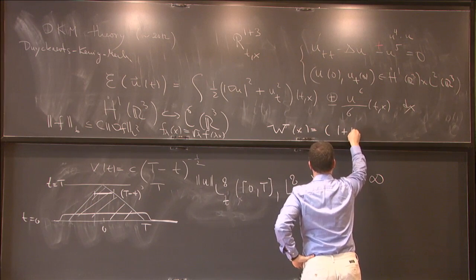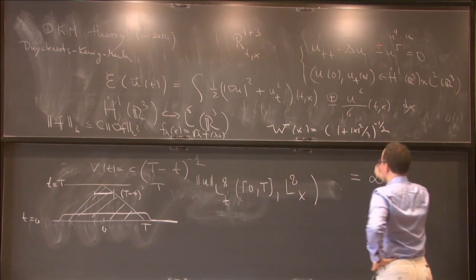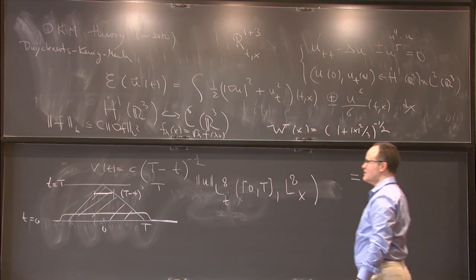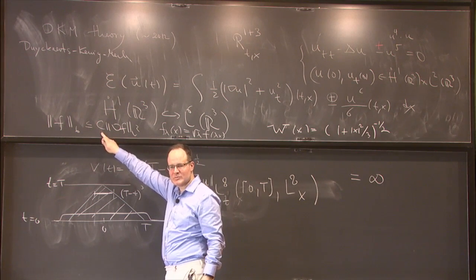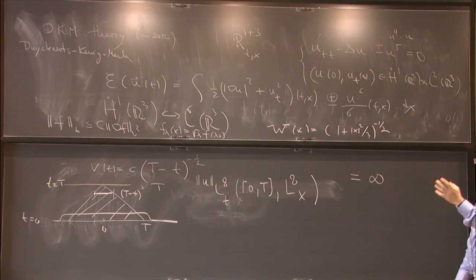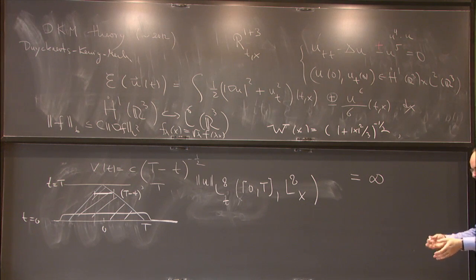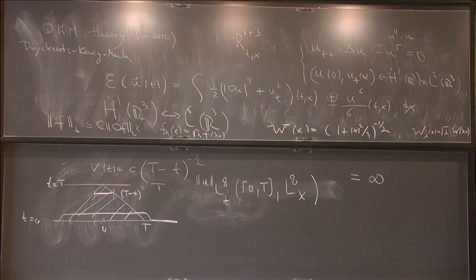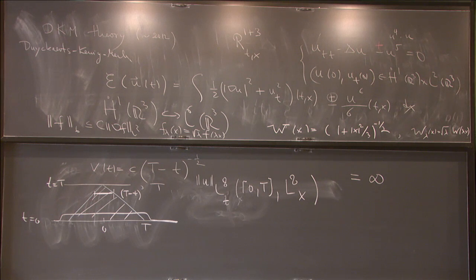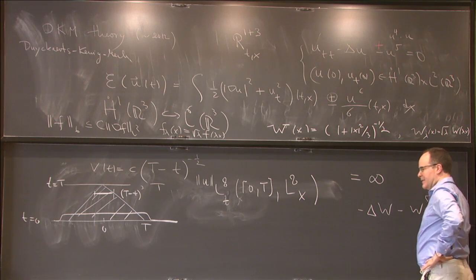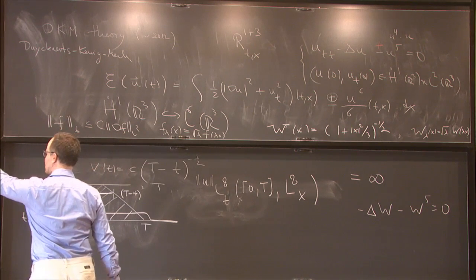What is our elliptic object? It's the extremizer of the Sobolev embedding. Remarkably, this extremizer is explicit: the function W(x) = (1 + |x|²/3)^{-1/2}, which decays like 1/r and attains the optimal Sobolev constant. Of course it's not the only one — by scaling, W_λ(x) = λ^{1/2} W(λx) is also an extremizer. These all solve -ΔW - W^5 = 0.